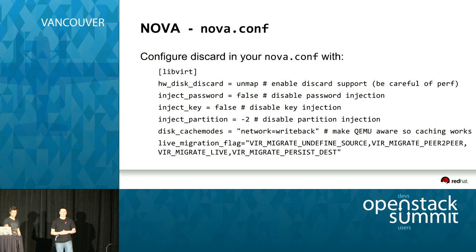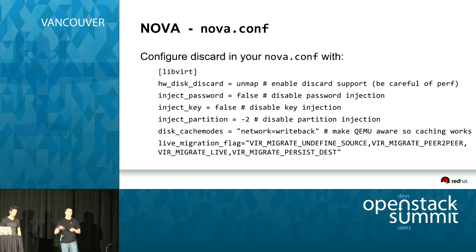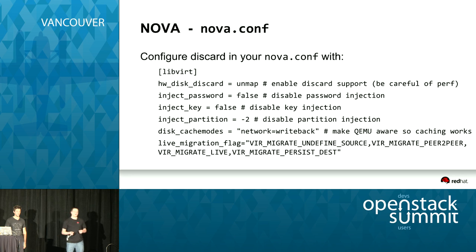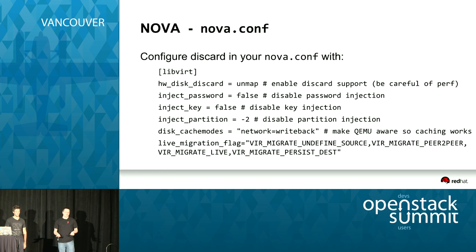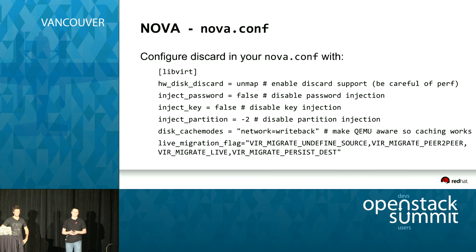On the Nova side, there are a number of different options you probably want to set. The first is for enabling discard support — like trim for an SSD. Since RBD devices are thin-provisioned, you can reclaim space from them by running an fstrim inside a virtual machine. But in order for that to work, QEMU has to know that RBD supports it and expose it to the guest. This can have some negative effects on performance if you're not careful, so if you enable it, you probably want to throttle the I/O via QEMU's I/O throttling. Also, since RBD is shared storage, Nova can't directly inject things into it easily, so disabling password injection, key injection, and partition injection is generally a good idea.